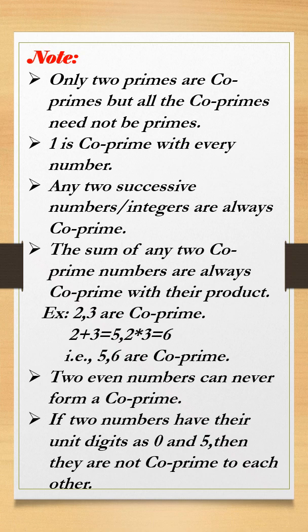Two even numbers can never form a co-prime. Additionally, if two numbers have their unit digits as 0 and 5, then they are not co-prime to each other. That means if any two numbers have unit digits of 0 or 5, those numbers cannot form a co-prime pair.